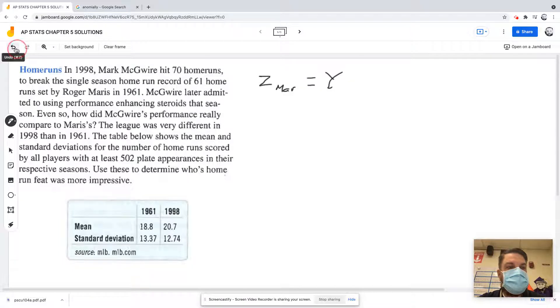The y-score is y minus mu over sigma. So now when I plug that in, I'm going to say 61 minus the mean which would be 18.8.